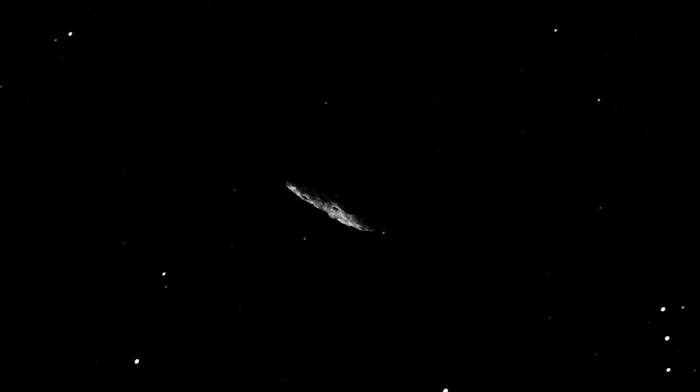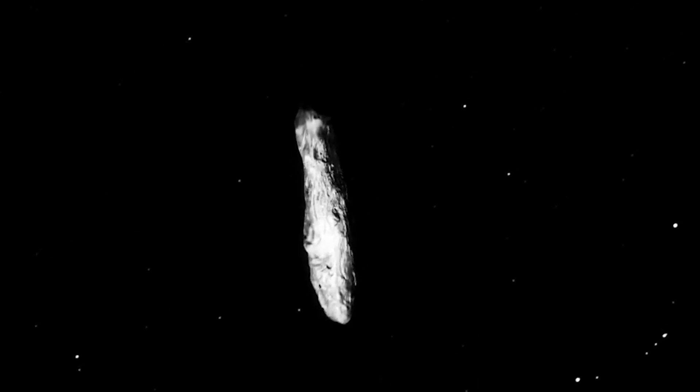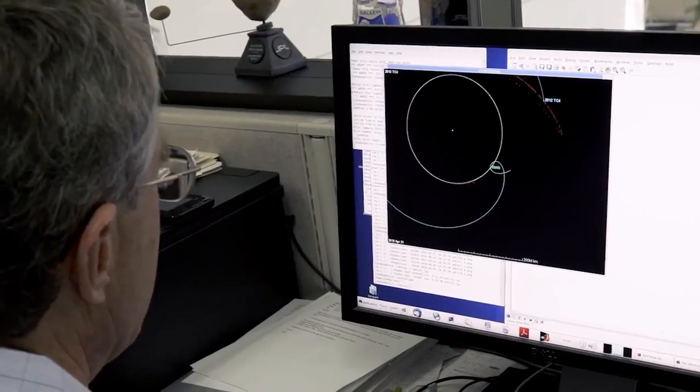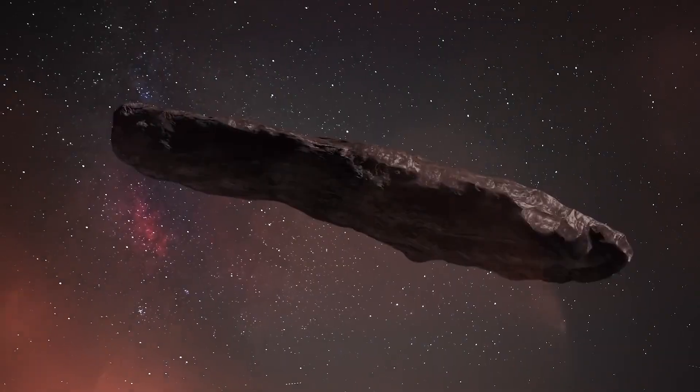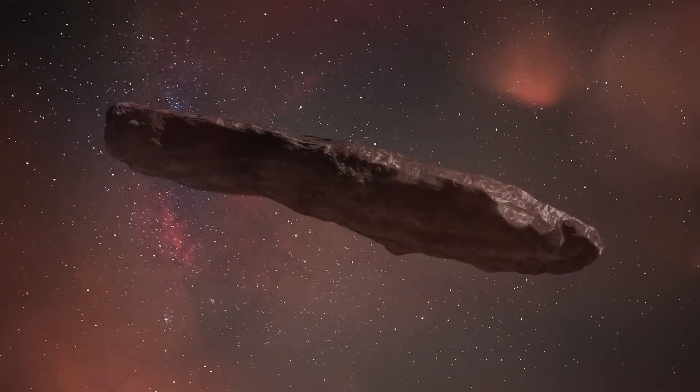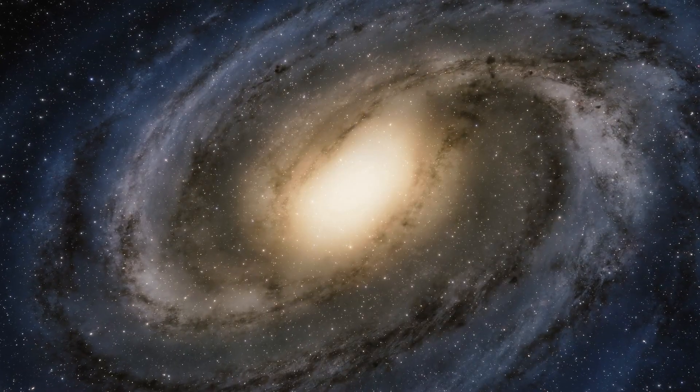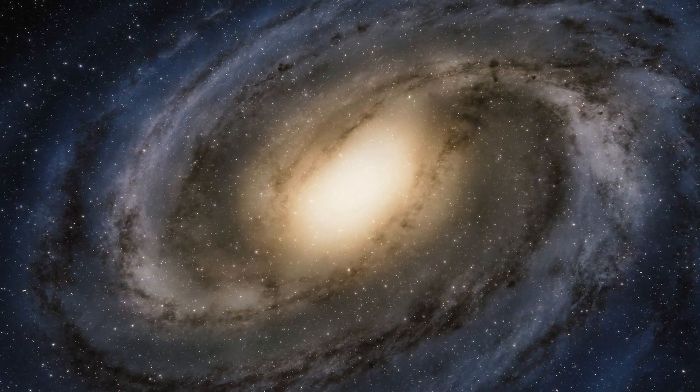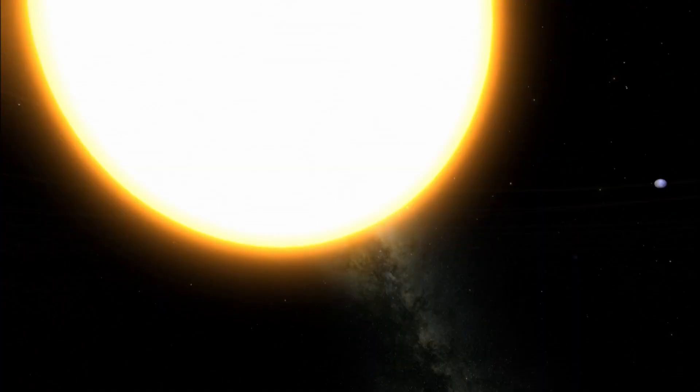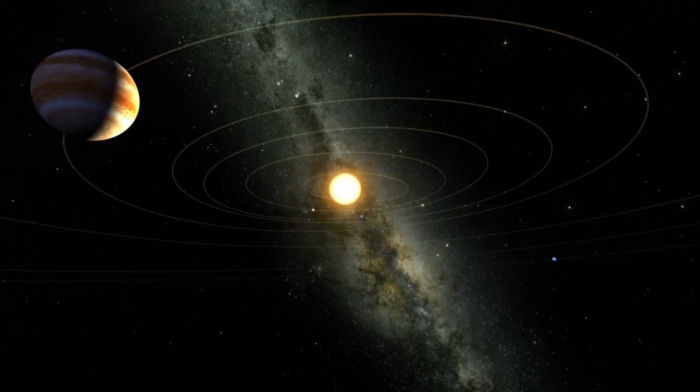It became clear that the object must have passed near another star system before entering our solar neighborhood. Its speed matched that of nearby stars, hinting that Oumuamua had been traversing the Milky Way for billions of years before its encounter with our solar system.